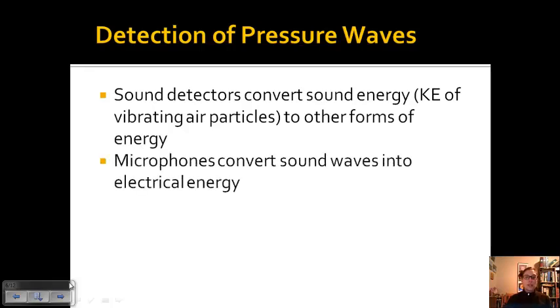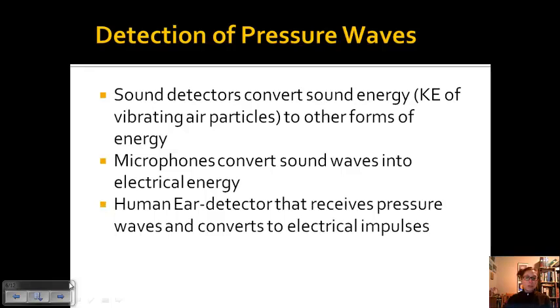For example, microphones convert sound waves into electrical energy, which can then be converted into other forms. The human ear is a detector that receives those sound waves and converts them to electrical impulses that your brain then uses to figure out what the sound is saying, or to figure out words and things like that.